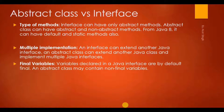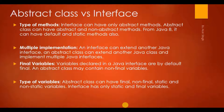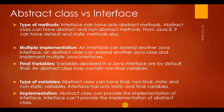Final variables: variables declared in a Java interface are by default final. An abstract class may contain non-final variables also. Abstract class can have final, non-final, static, and non-static variables, while interface has only static and final variables. Implementation: abstract class can provide the implementation of an interface. Interface can't provide the implementation of an abstract class.